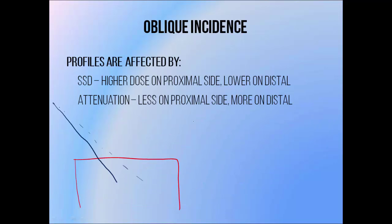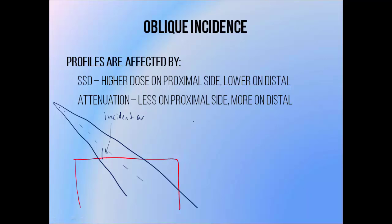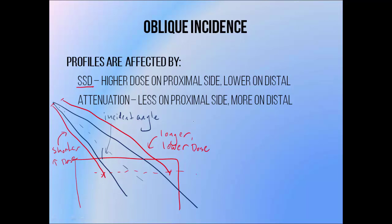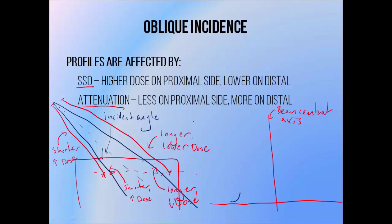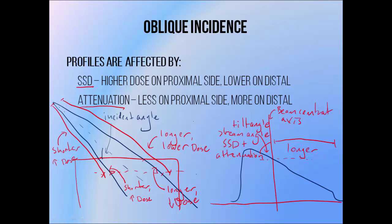A photon beam striking a patient at an oblique angle will produce a different shaped beam profile for a number of reasons. The side of the beam that's closest to the source will travel less distance before it strikes the patient, giving it a shorter source to surface distance, which results in a higher beam intensity and therefore a higher dose at the profile depth. The other side has a longer source to surface distance and therefore a lower dose. The distance travelled through the patient on both sides of the beam is also different — the side closest to the source experiences less attenuation, and the side further away experiences more. The net effect is that the profile is tilted, extending further from the central axis on the side opposite to the source. The profile is tilted at a greater angle than that of the beam incidence, due to the combined effect of different source to surface distances and different attenuation on different sides of the profile.